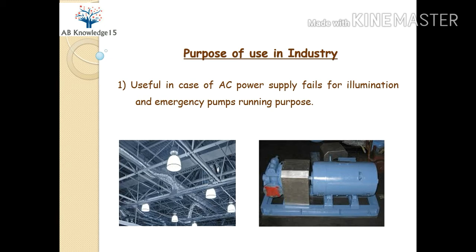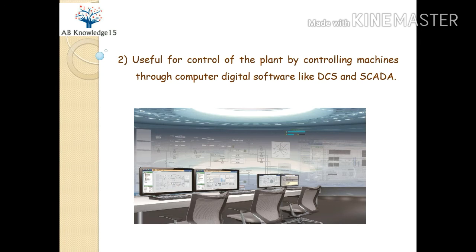Next is the purpose of use of the battery bank in industry. The first purpose is useful for illumination and running emergency pump motors. Suppose AC power fails in any industry — there will be a blackout. But if battery banks are installed in the plant, DC power comes into line and the necessary parts will be illuminated by the DC power source through the battery bank. For emergency pump running motors — such as lubrication motors, oil jacking motors, and seal oil motors — power will be provided by the battery bank.